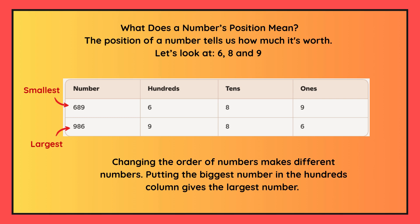To make the smallest number that we can, we put the smallest number in the hundreds column and the largest number in the ones column.